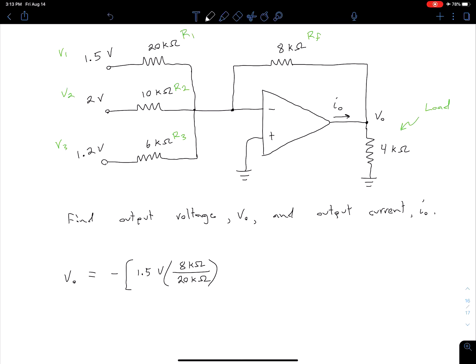That would be our first term for that first voltage and resistor. Then we would move on to our second voltage input V2, which is now 2 volts, and that's multiplied by R_F which is 8 kΩ in the circuit divided by our R2 which is 10 kΩ. And then finally we have one more input which is 1.2 volts, and that's multiplied by R_F which is still 8 kΩ divided by R3 which is 6 kΩ.